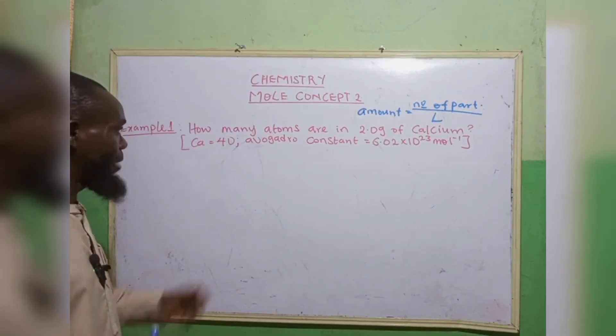How do we match these together? Number of moles equals to mass over molar mass — we have mass and molar mass. Amount equals to number of particles over Avogadro's constant — we are looking for number of particles and we have Avogadro's constant. So we can match them together: mass over molar mass is equal to number of particles over Avogadro's constant. Our mass is 2.0, our molar mass is 40, equals to number of particles over 6.02 times 10 to the power of 23.